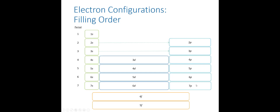A few things to note: for S block and P block elements, the sub-shell you're filling has exactly the same number as the period. So row 1 fills 1S, row 2 fills 2S and 2P, row 3 fills 3S and 3P, row 4 fills 4S and 4P. However, the D block is always one behind — period 4 fills the 3Ds, period 5 fills the 4Ds. And the F block is always two behind — 4F is actually in row 6, and 5F is in row 7.